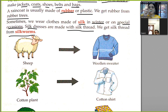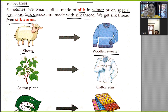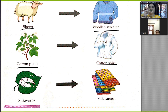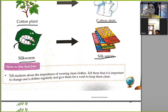Sheep give us wool, which we use to make woolen clothes. Cotton plants give us cotton, then factories make cotton shirts. Silk worms give us silk thread, which is used to make silk fabric for our dresses.